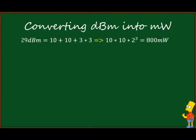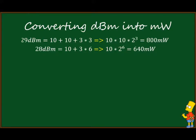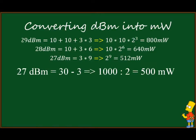Now let's take all values from 30 to 20 that we haven't covered — learning the procedure, not memorizing results. 29 dBm = 10 + 10 + 3 + 3 + 3 + 3 = 800 milliwatts. 28 dBm = 10 + 18 = 10 × 2^6 = 640 milliwatts. 27 dBm = 2^9 = 512 milliwatts; alternatively 30 − 3 = 1000 / 2 = 500 milliwatts — both results are close enough.